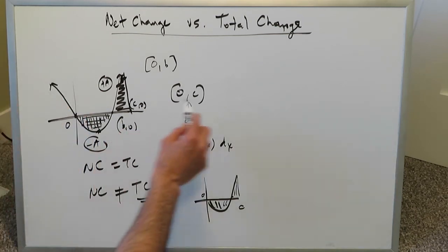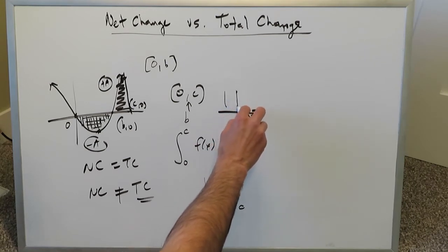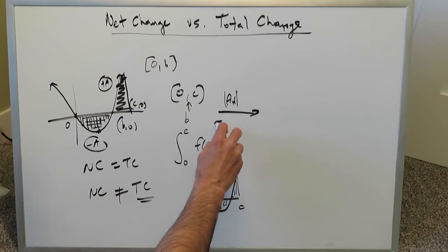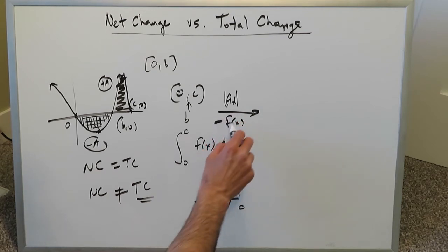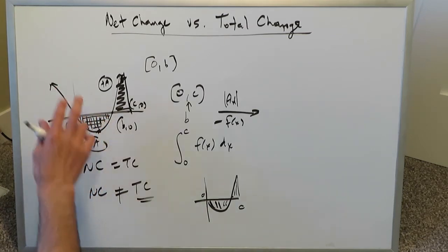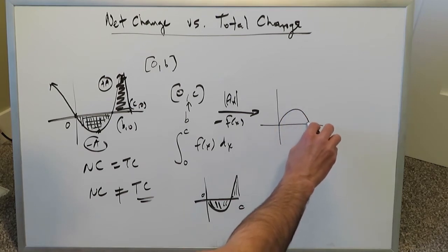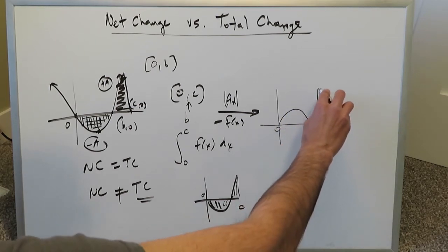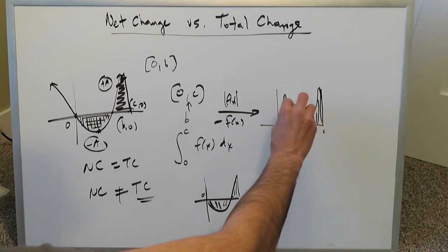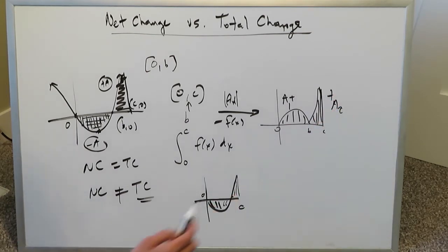You only worry about absolute values when calculating total change. For total change, all change is treated as positive. On the same graph, you adjust by using absolute value — or by placing a minus sign outside the function — for the interval where the function is negative. This flips the negative area to positive, and the graph now shows all positive areas.